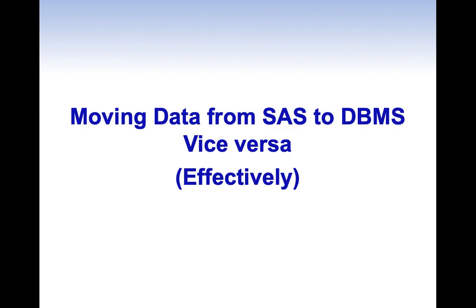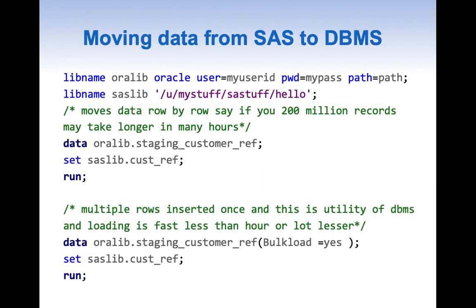Now let us discuss how we can move data from SAS to DBMS and vice versa very effectively. The first part is how to move data efficiently from SAS to DBMS. We can do a simple data step using a SET statement to move the data to Oracle — it is just a simple copy of a SAS dataset to Oracle. However, what happens in this scenario is we move data row by row. If you have a large number of rows it is going to take forever — sometimes 5 hours, 6 hours, 8 hours, or 10 hours.